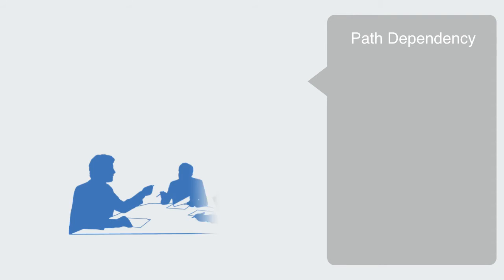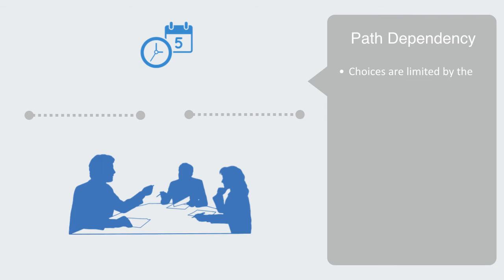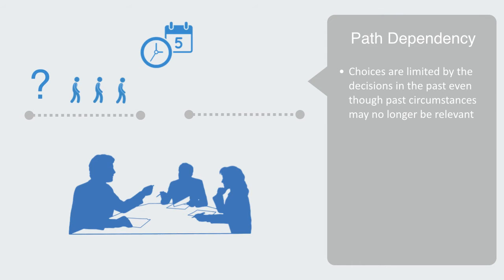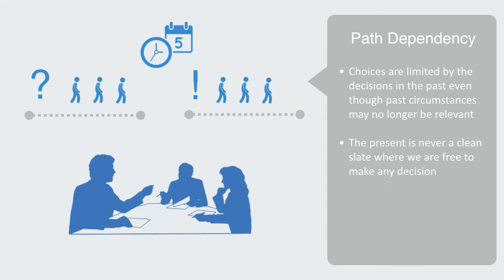Path dependency describes how the set of decisions one faces currently are limited by the decisions one made in the past, even though those circumstances may no longer be relevant. Even though previous choices were made on chance or limited information, with better options now being available, it is still easier to simply continue upon a pre-existing sub-optimal path than to create an entirely new one. In other words, the present is never a clean slate where we are free to make any decision — it is contingent on how we got to this point. In a very broad sense, it means that history matters.